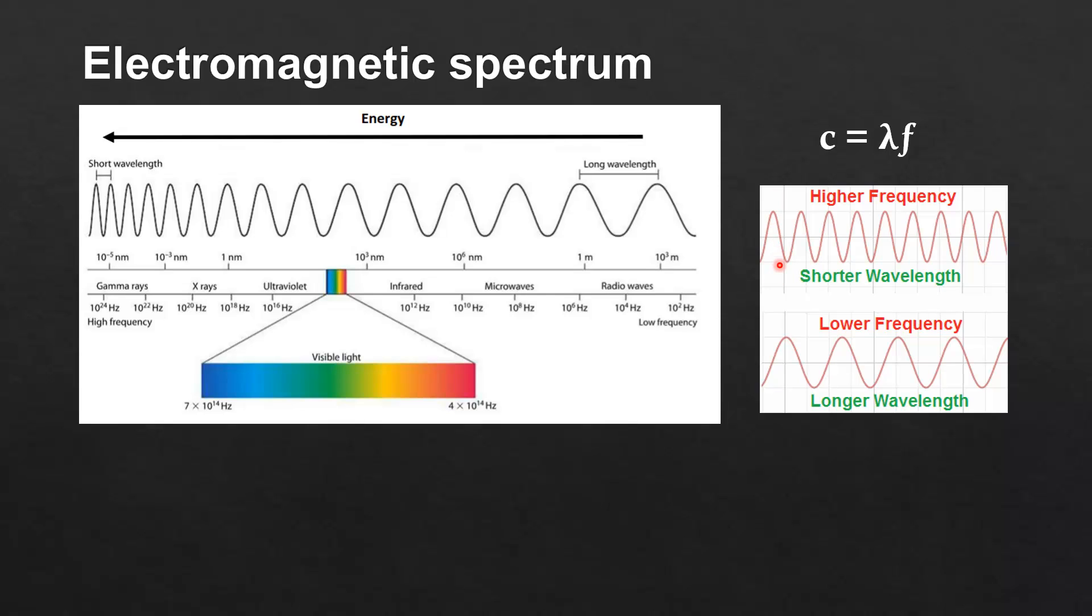Here we can see the relationship between wavelength and frequency. The wavelength is the distance between two crests of a wave. If we have higher frequency we have a shorter wavelength. If we have a lower frequency we have a longer wavelength.